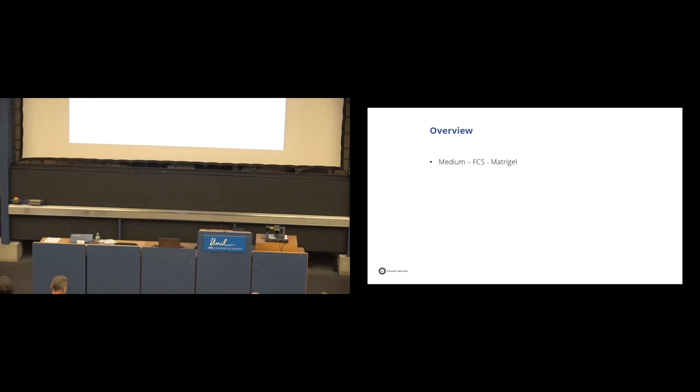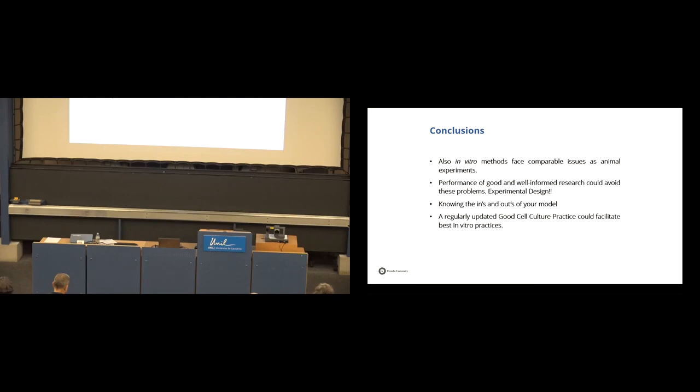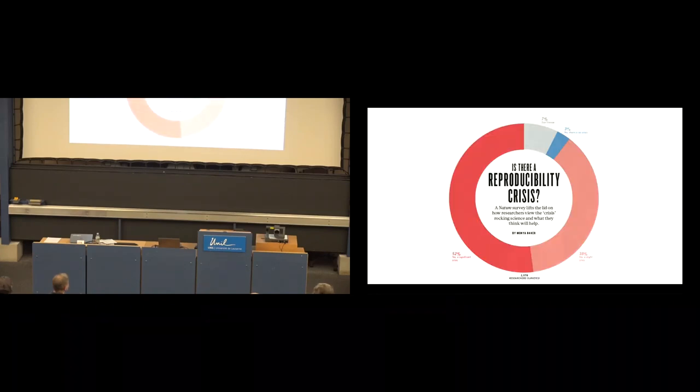Okay so an overview, we have a problem with medium particular FCS and Matrigel, cell identification, genetic drift, the gender or sex of the cells. So also in vitro methods face comparable issues as animal experiments so we can learn from them as well and performance of good and well informed research could avoid these problems and very important there is experimental design and reporting on experimental design and knowing the ins and outs of your model. Regularly updated good cell culture practice could facilitate best in vitro practices and detailed reporting contributes to reproducibility.